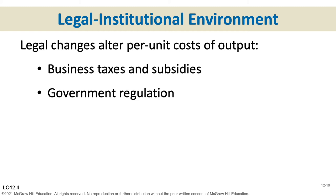Taxes represent money from the business to the government. If business taxes go up, that's bad for producers, so aggregate supply shifts left. But what about subsidies? Subsidies is money from the government to the business — if subsidies go up, that's a good thing for producers and they shift aggregate supply right, producing more at all possible prices. If there are new environmental protection procedures or laws that businesses must comply with — even if it's not profitable — that will shift the aggregate supply curve left.